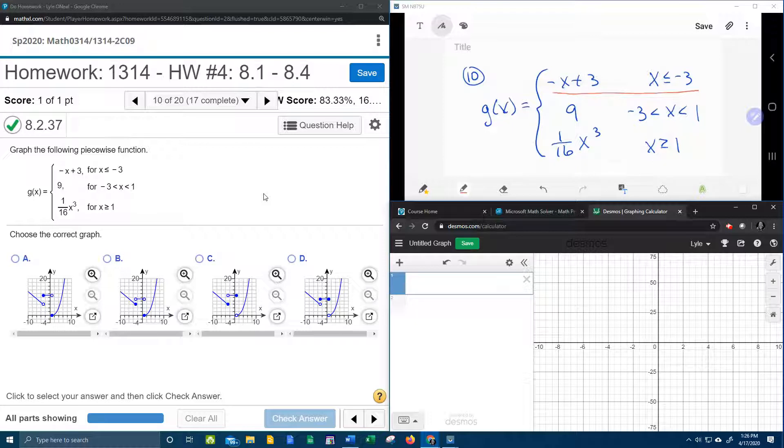We know that because, remember g of x means y. So this says y equals negative x plus 3 for the first piece, and that's the same as y equals mx plus b. That's a linear, where we can see that our slope is negative, and so we know that for the first piece of the graph, we're going to have a line that's going down.